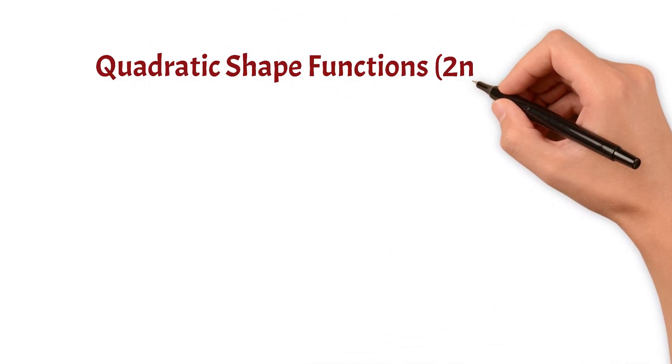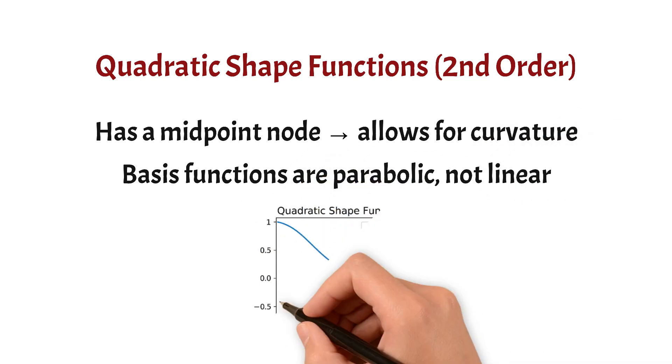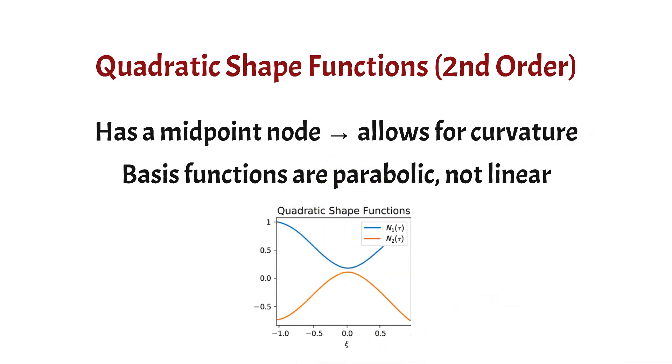Now, let's move on to the quadratic shape functions, also known as second order shape functions. Unlike the linear ones, they have an extra node at the midpoint of the element. The additional node allows the shape functions to capture curvature, which is especially useful for modeling more complex behaviors.